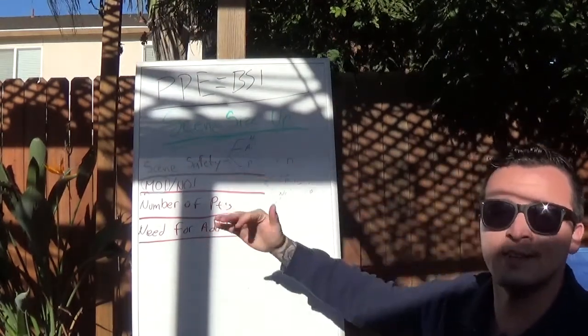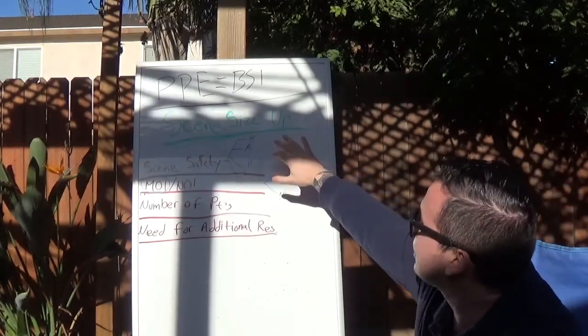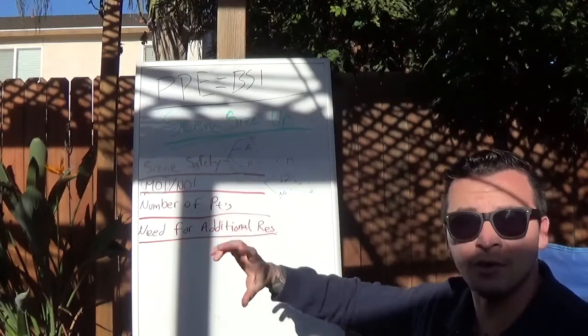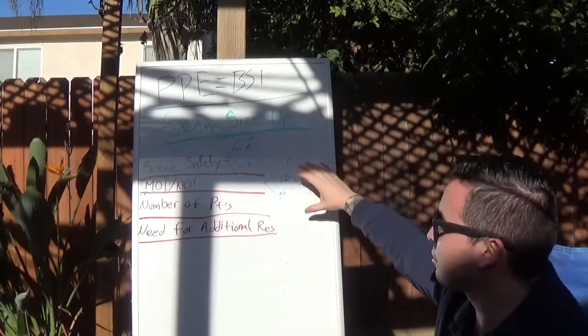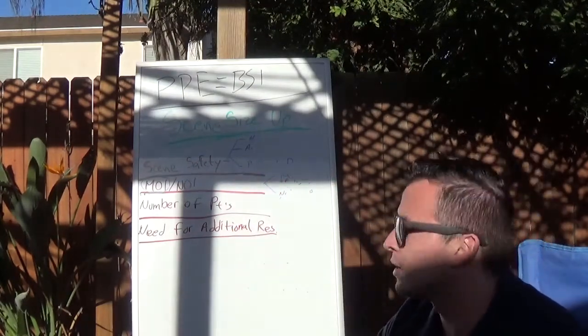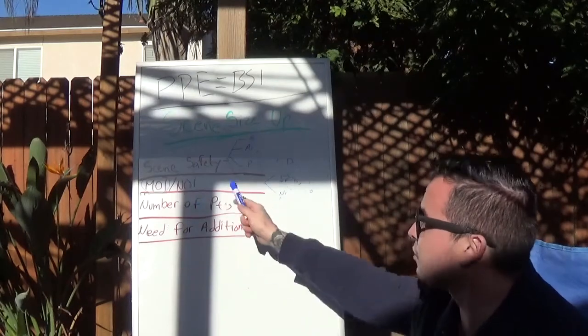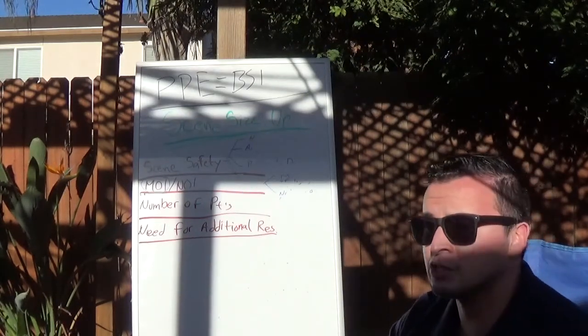And now we're into your scene size up, which is what I'm talking about today. So in your scene size up, that section of your NREMT psychomotor skill for the medical and trauma sheet skill sheet, you have these four little categories. Really simple, really easy.